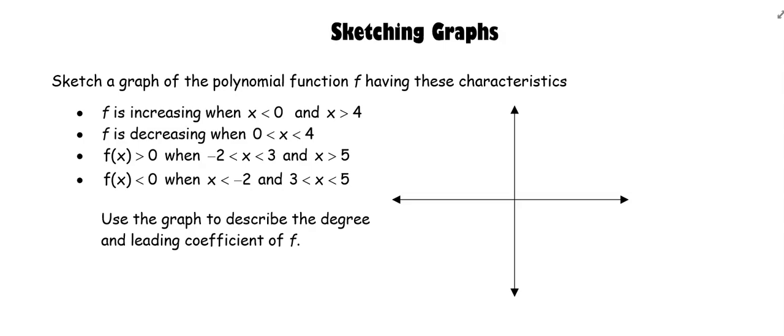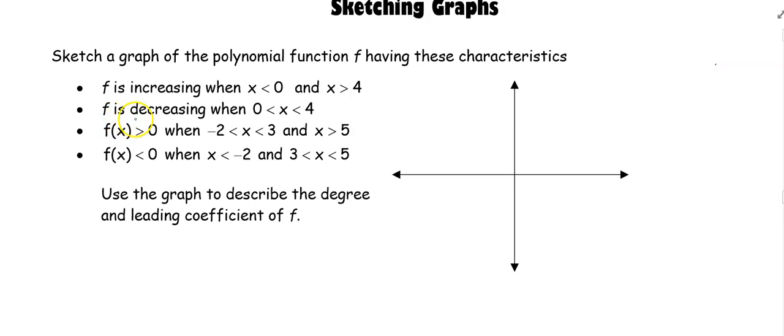Sketch a graph of a polynomial function f having these characteristics. We've got f is increasing when x is less than 0 and x is greater than 4. We're going to read through everything first and then we'll go ahead and start putting this on the graph. Then we know it's decreasing between 0 and 4.